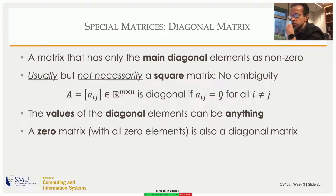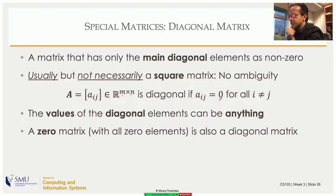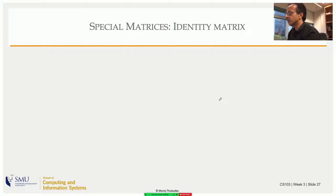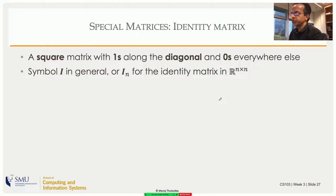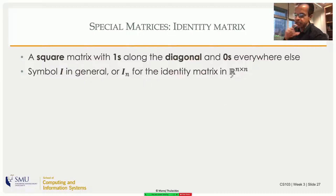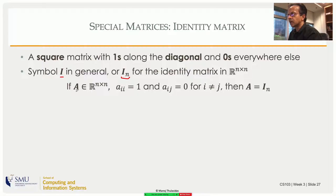A matrix with all zeros is also a diagonal matrix. Many of the names we're defining can be applied to the zero matrix, which is the additive identity in the space of matrices. Now let's define the identity matrix: a square matrix with ones along the diagonal and zeros everywhere else, denoted I or I_n when specifying n rows and columns.